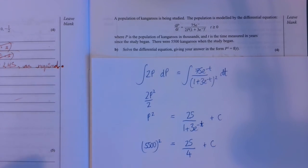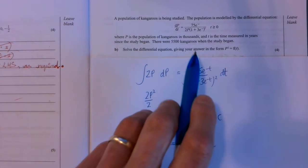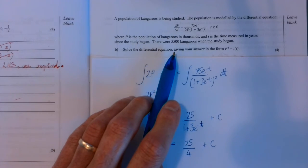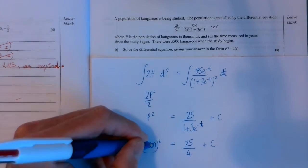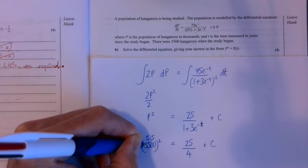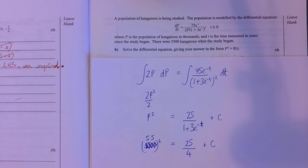Right, spotted my mistake. The population is in thousands. So that should be 5.5, not 5,500. So that's nice and easy. So 5.5 squared, take away 25 over 4. This is to give us the value of c, remember. c is 24.